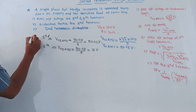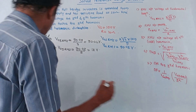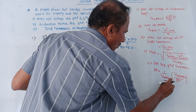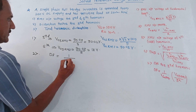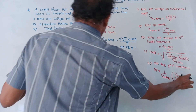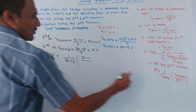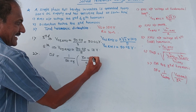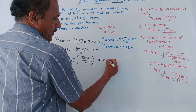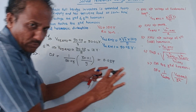Second part: distortion factor for third harmonic. The formula for DF is 1 upon V01RMS, multiplied by V03RMS upon n squared inside the bracket. We have V01RMS = 90.03 and V03RMS = 30.01, with n squared = 3² = 9. Solving this, the value of DF will be 0.037. If you want to calculate it in terms of percent, multiply this value by 100.